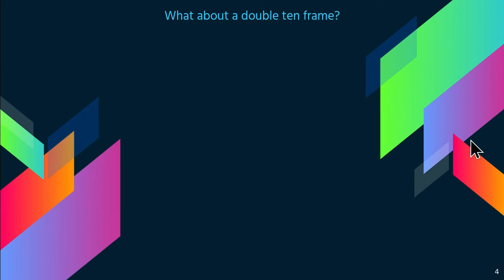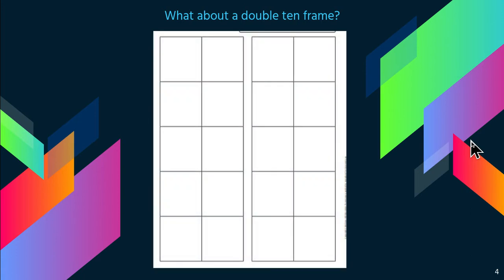What about a double 10 frame? Do you remember what that means? That's when you have two 10 frames, and so if there are 10 boxes in each 10 frame, a double 10 frame shows 20. So if you have a filled double 10 frame, it's 10 and 10, which makes 20.